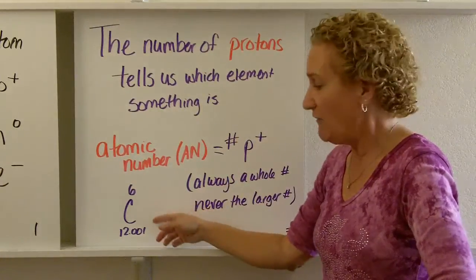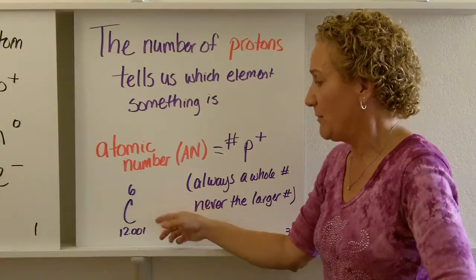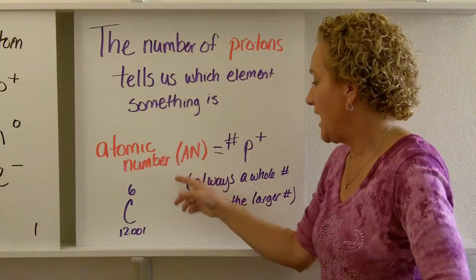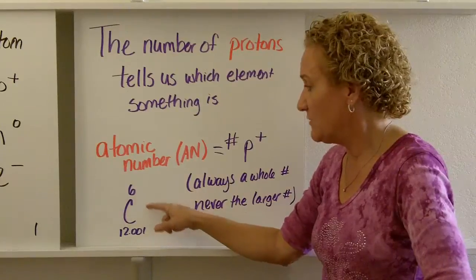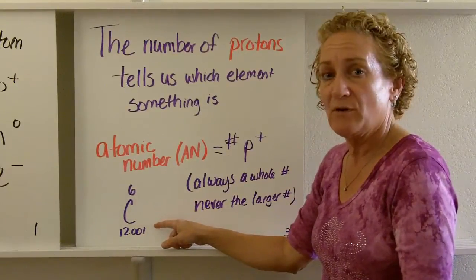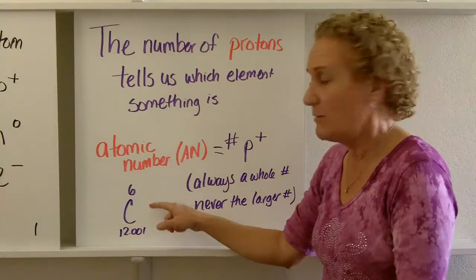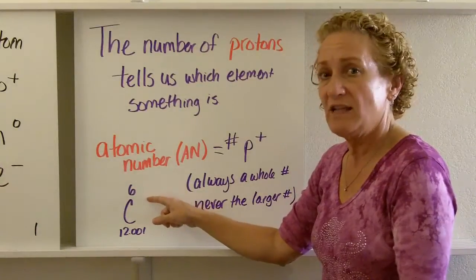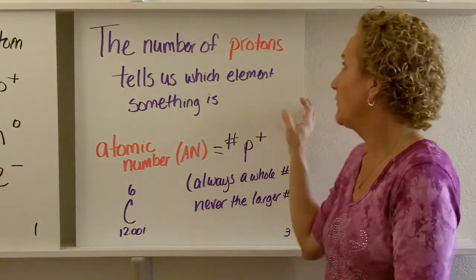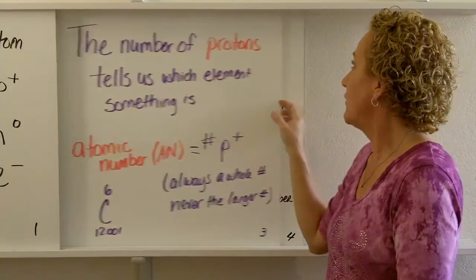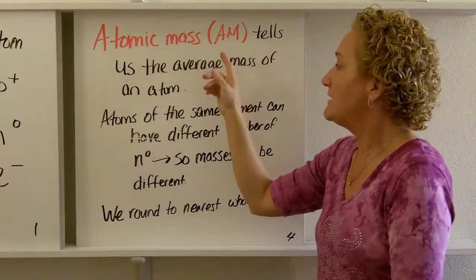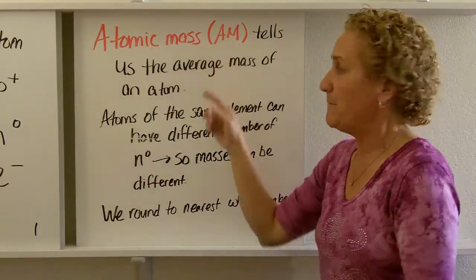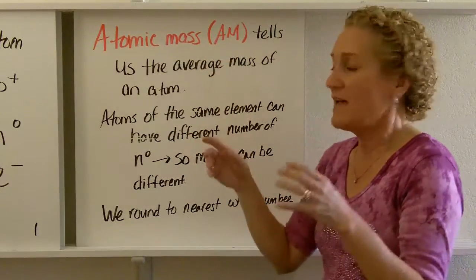On a periodic table, you'll often see it written like this with two numbers. The atomic number is always the whole number, it's never a decimal, and it's never the larger number. So that's an easy way to tell the atomic number from the other number that's there. And what is the other number? It's the atomic mass, sometimes we call that the AM. And it tells us the average mass of an atom.